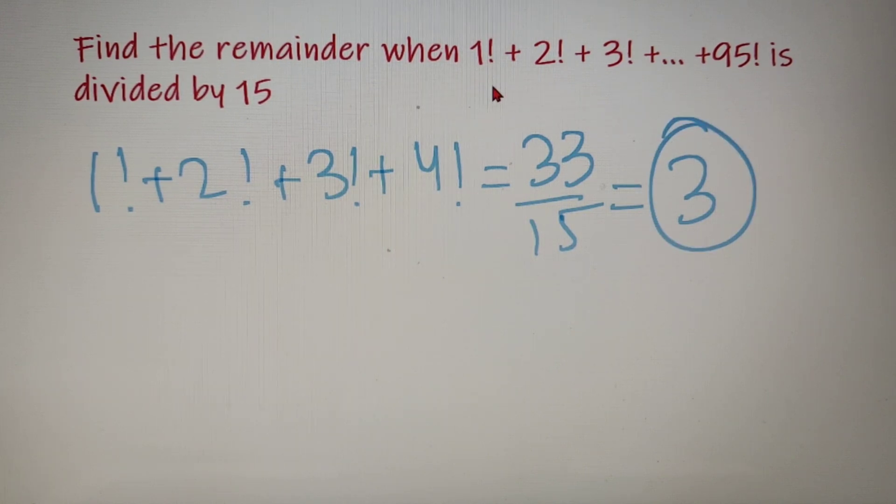So the remainder when 1 factorial plus 2 factorial all the way up to 95 factorial is divided by 15 is equal to 3.